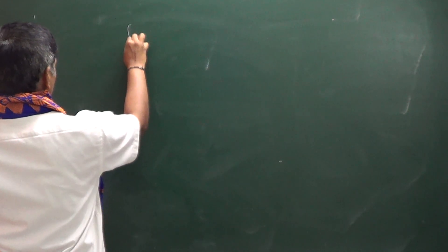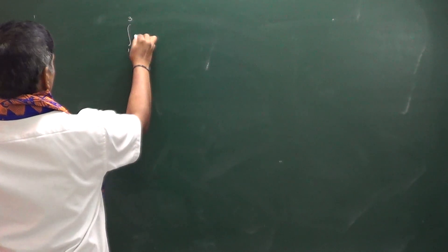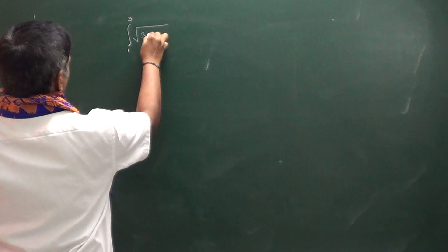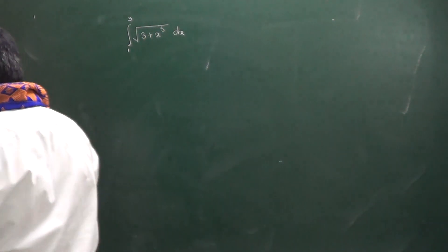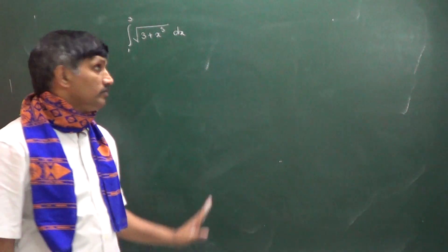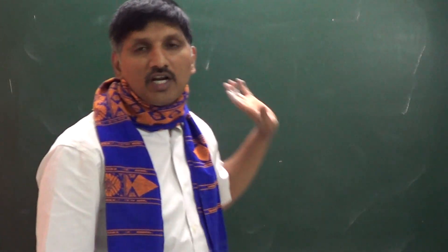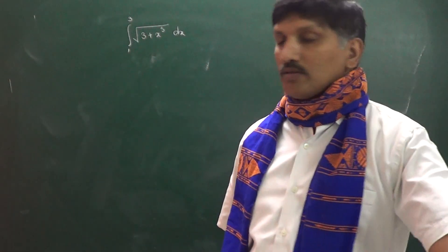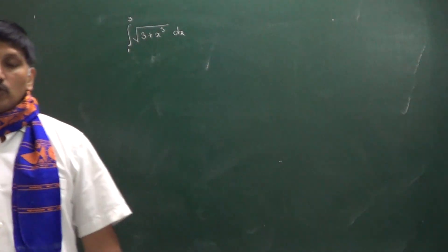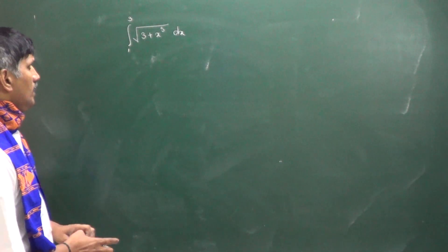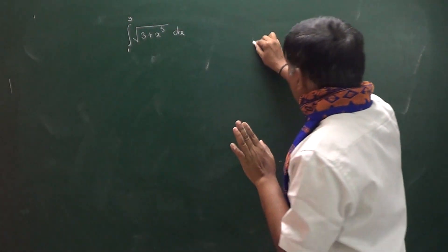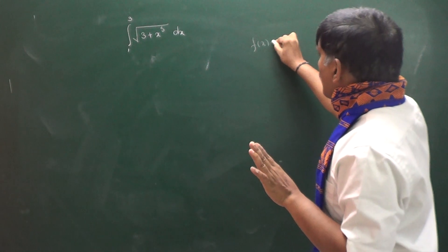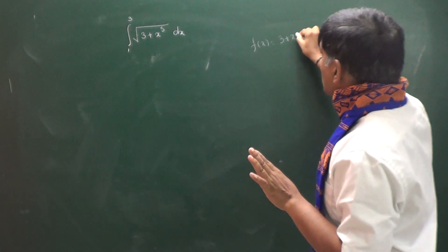Based on that inequality property, let us look at a question. The question is: find the bounds for the integral from 1 to 3 of √(3 + x³) dx. To analyze this, let the function be f(x) = 3 + x³.